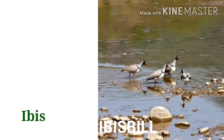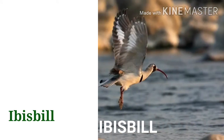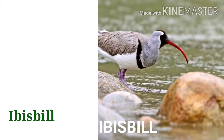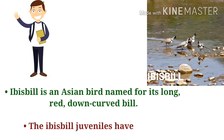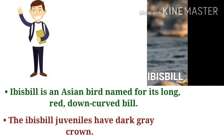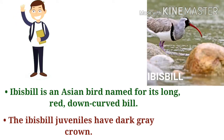Do you know this bird? This is an ibisbill. I-B-I-S-B-I-L-L. Let's introduce the ibisbill. The ibisbill is an Asian bird named for its long, red, down-curved bill. The ibisbill juveniles have a dark grey crown.